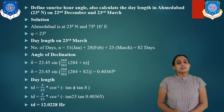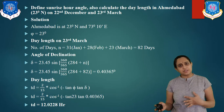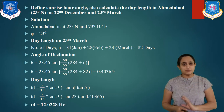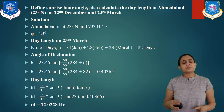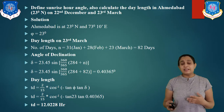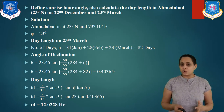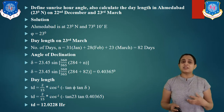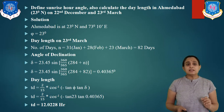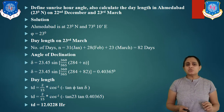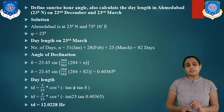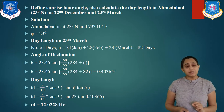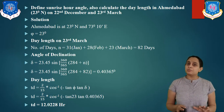Now let us solve the second numerical, which is slightly different. In this session we will cover nearly 3 different numericals. Define sunrise hour angle and calculate the day length in Ahmedabad, which is situated at 23 degrees north, on 22nd December and 23rd March. The latitude angle phi is 23 degrees north and Ahmedabad longitude is 73 degrees 10 minutes east.